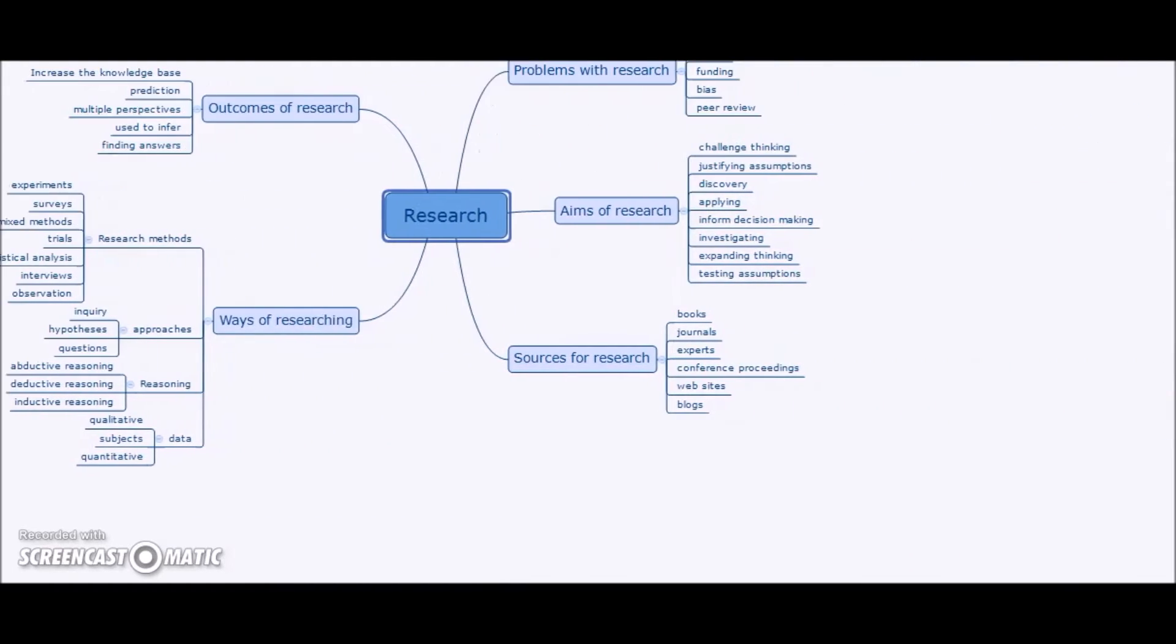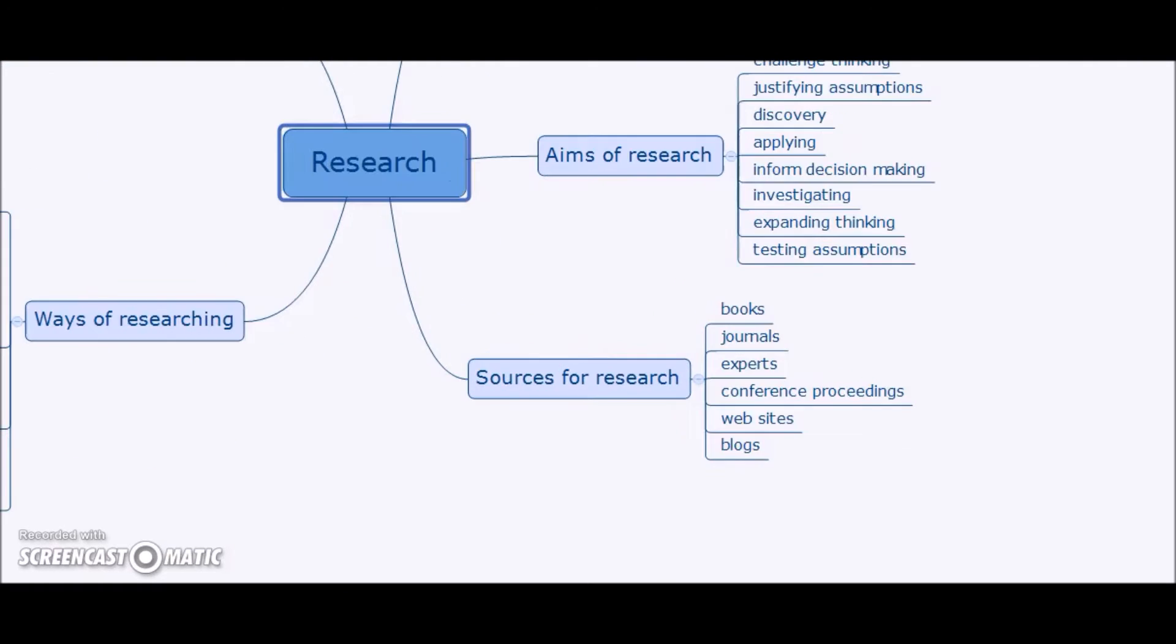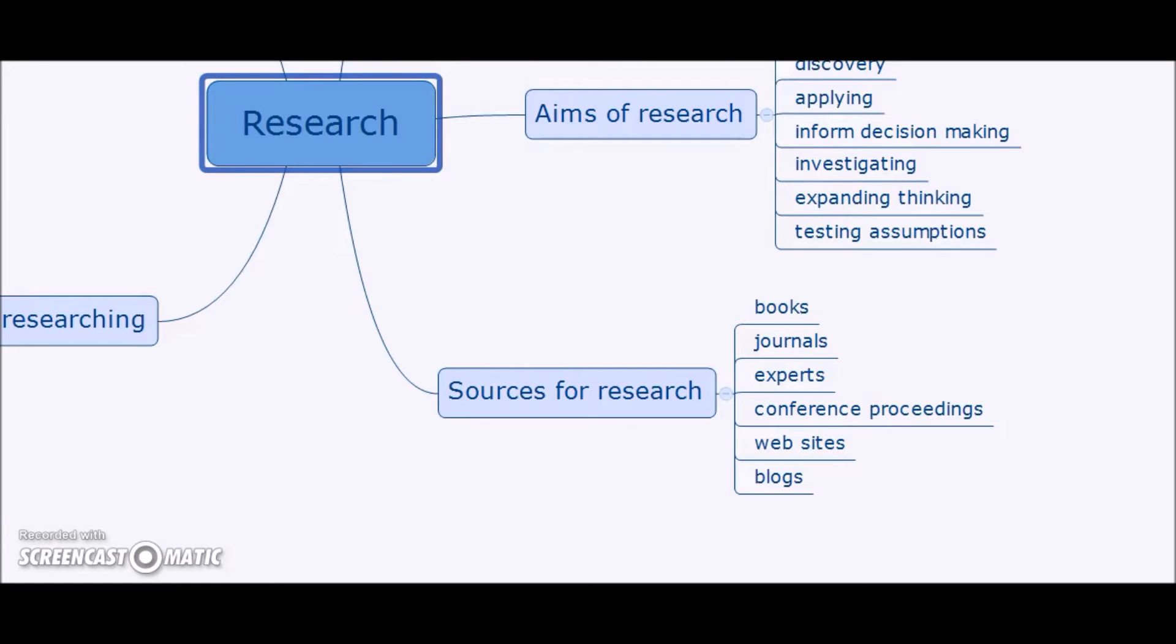So what would be our sources for research if we've made a decision to research something? Where do we look? Well, initially, of course, before we actually do experiments, surveys, observations, and so on, we need to do our literature reviews. We need to find out what the state of the art already is. And those sources might be the more traditional ones, like books, journals, conference proceedings. Or these days, of course, there's a lot more electronic material, websites, and blogs. And there are other sources of research too.